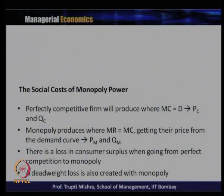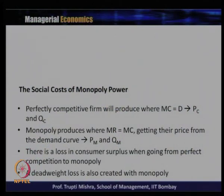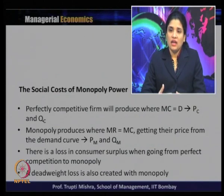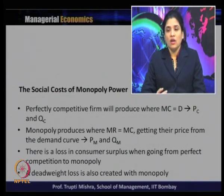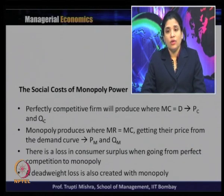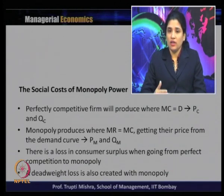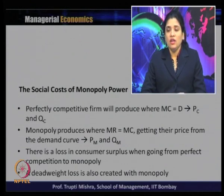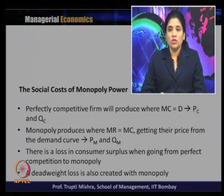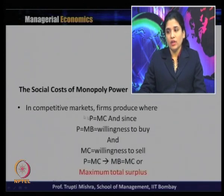In the case of a perfectly competitive firm, the firm produces at a point where marginal cost equals price (MC = P), and the price is determined by demand and supply forces in the market. Whereas a monopoly produces where marginal revenue equals marginal cost (MR = MC), obtaining its price from the demand curve. The loss to consumers when moving from perfect competition to monopoly occurs because in monopoly, price is always greater than marginal cost.